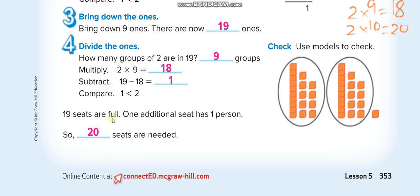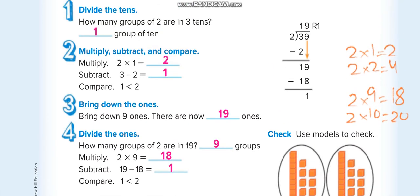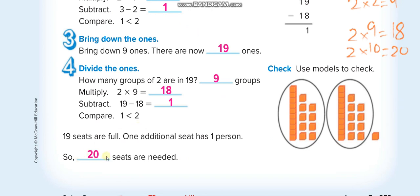They need 19 seats are full. One additional seat has 1 person. So for the remaining 1 person, you need an additional seat. So you need 20 seats.